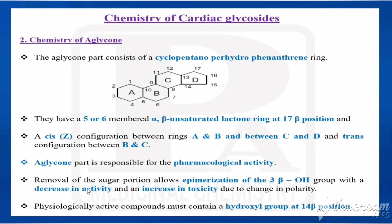If the sugar is removed, epimerization of the 3-beta hydroxy group occurs, reducing activity and increasing toxicity due to a change in polarity. For a physiologically active compound, it should contain a hydroxy group at the 14 beta position.